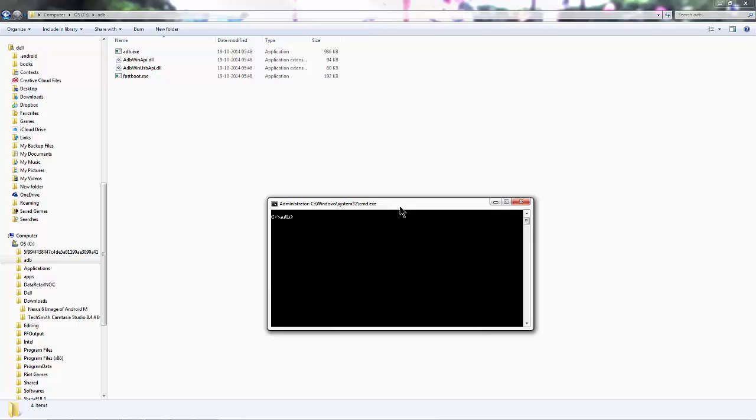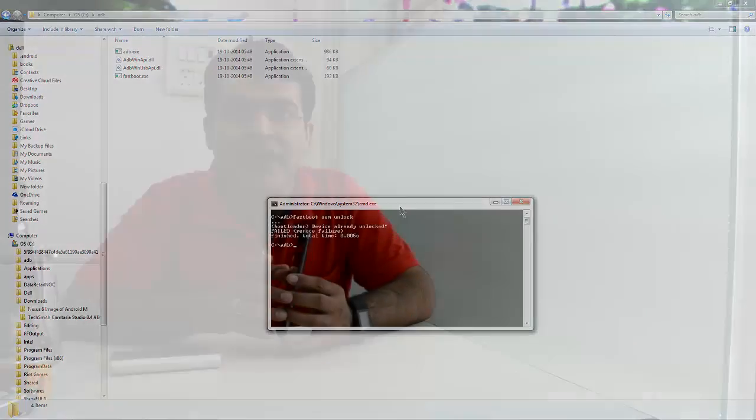On the ADB tools, now you need to give the unlock command which is fastboot oem unlock. The command is provided in the description section below. You can copy and paste it in your command prompt. Just hit enter and that will unlock the bootloader on your Nexus device.